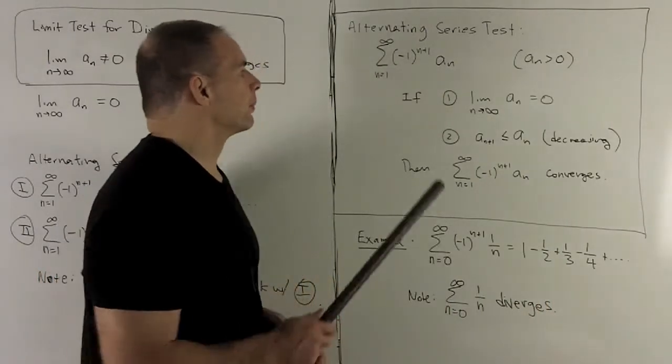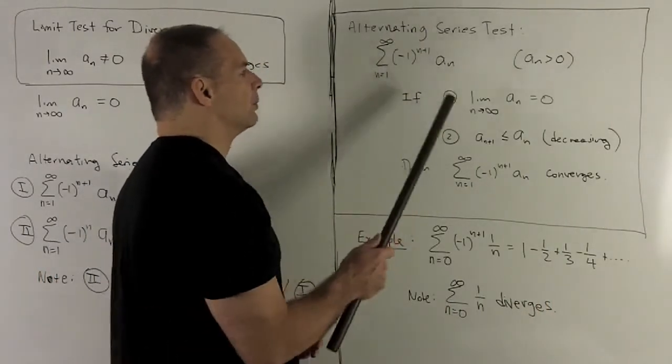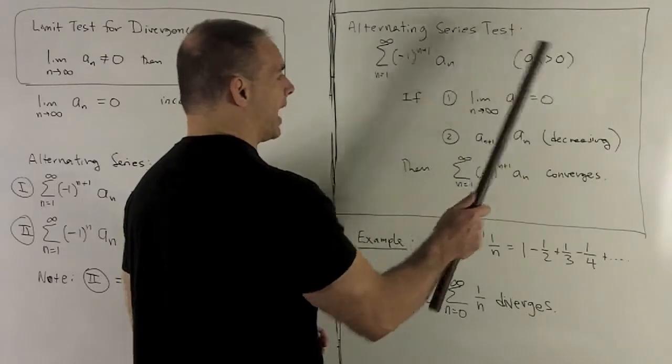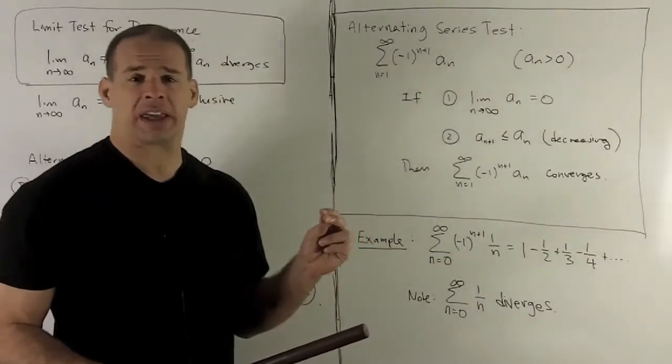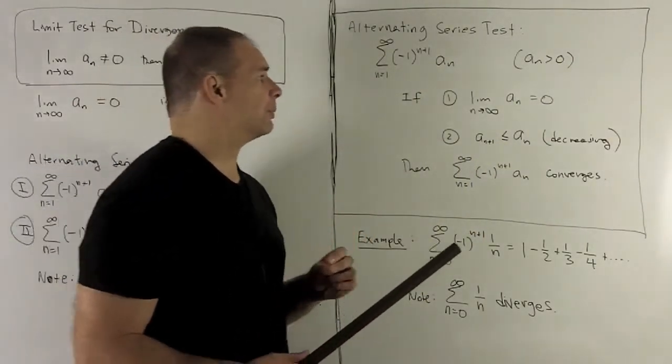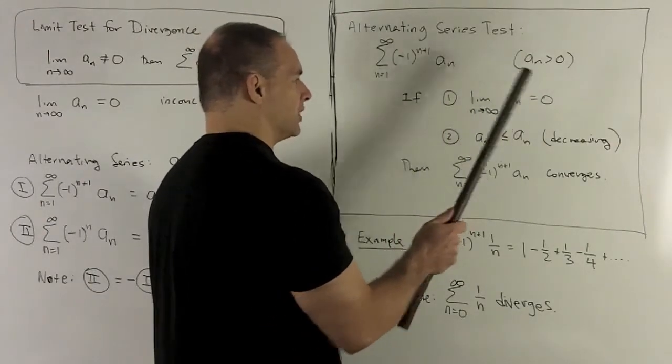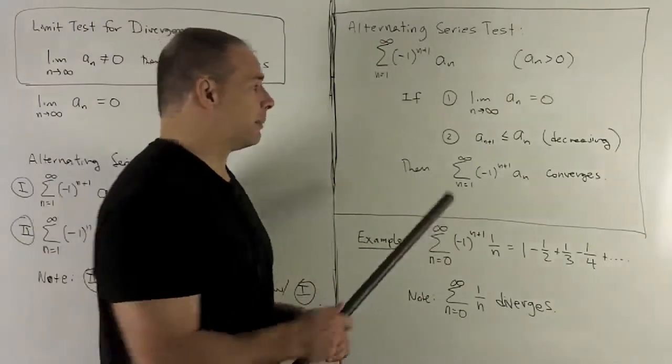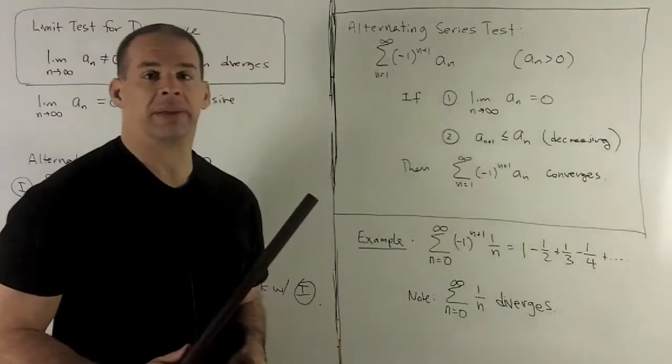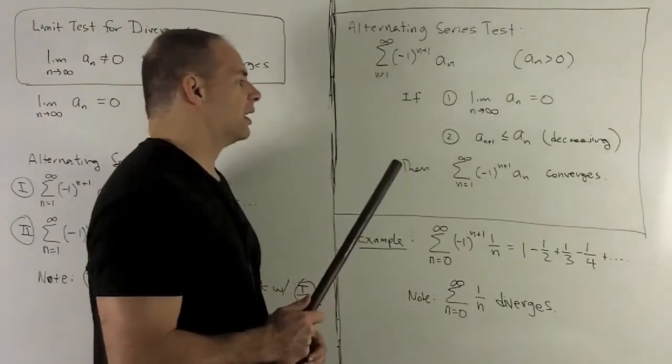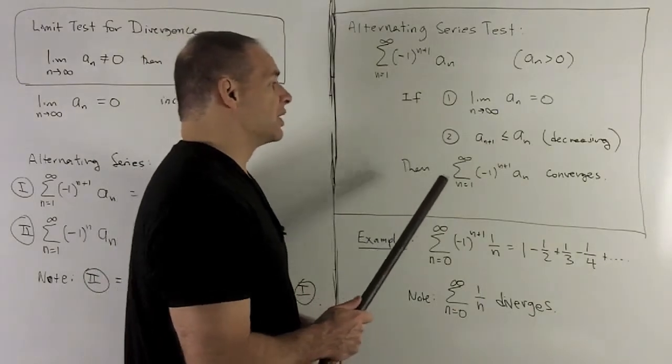Alternating series test. I have my alternating series, all of our a_n's are positive. I only need to check two things to get convergence. I need the limit of the a_n's as n goes to infinity equals zero, and that my a_n's are decreasing. If I have these two conditions, then my series is going to converge.